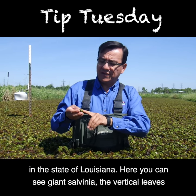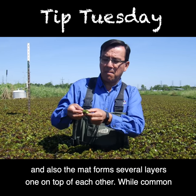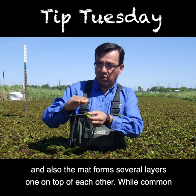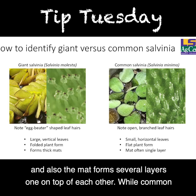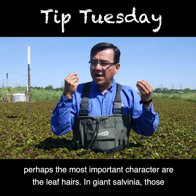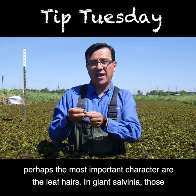Here you can see in Giant Salvinia the vertical leaves, and also the mat forms several layers, one on top of each other. While in Common Salvinia, the mat is usually a single layer and the leaves are more flat.